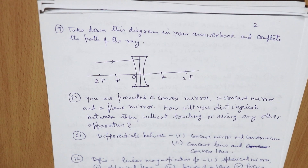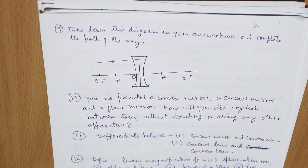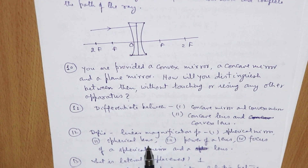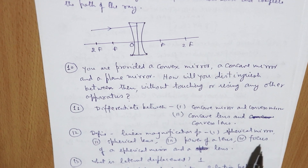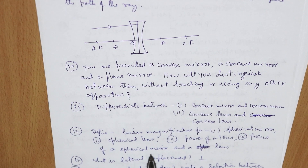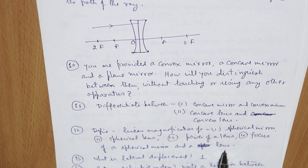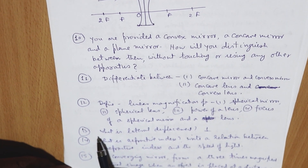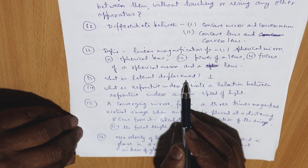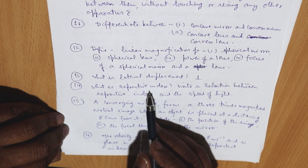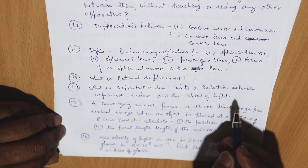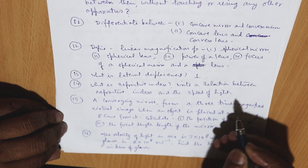Define linear magnification of a spherical mirror and also a spherical lens. Define the power of a lens. Define the focus of a spherical mirror and a lens. Then, what do you mean by lateral displacement? What is the refractive index — write the relation between refractive index and the speed of light.